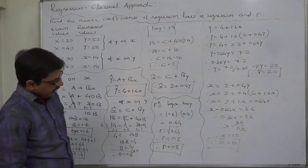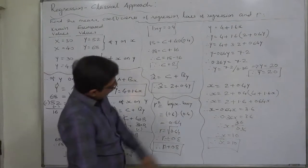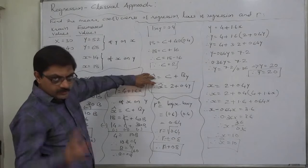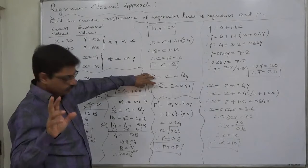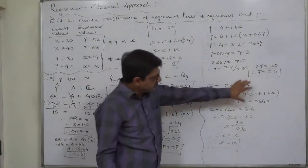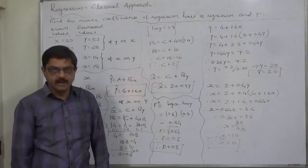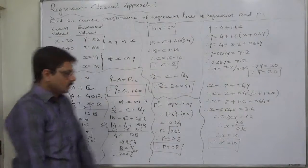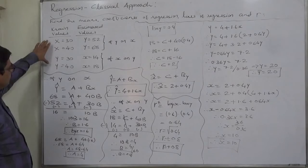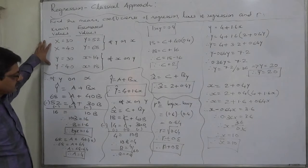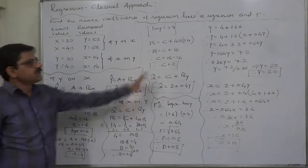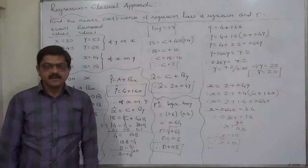We are well aware that if we solve the two lines of regression, the values of x and y are respectively x-bar and y-bar. So in this way, on the basis of just this much information, we can find all these things. Thank you very much.